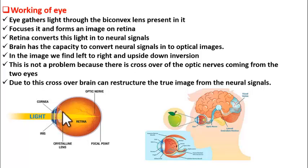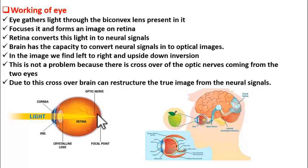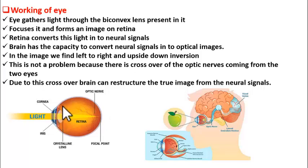When light falls on the convex lens of our eye, the light rays converge and form an image on the retina, because our retina is exactly at the focal point of our lens.